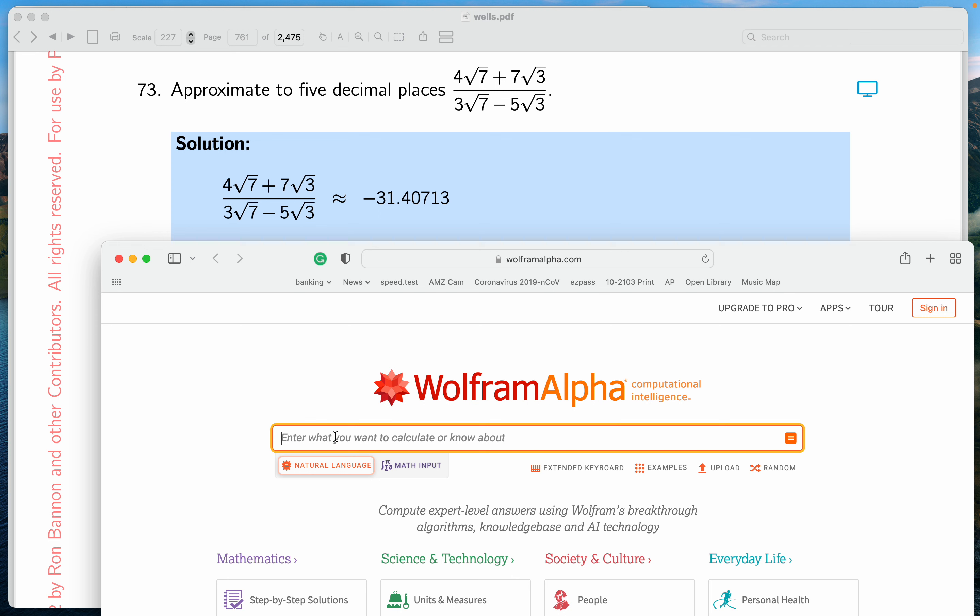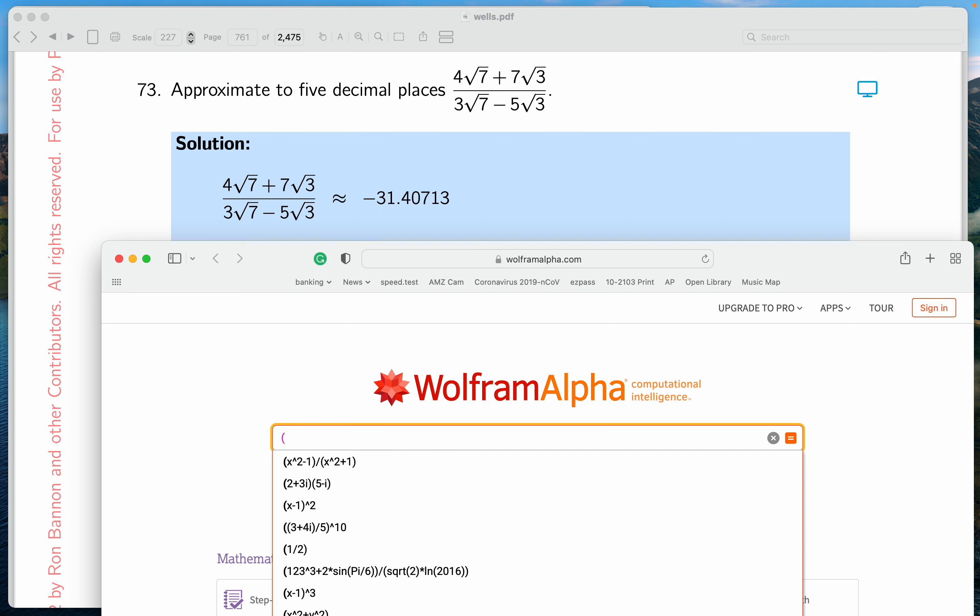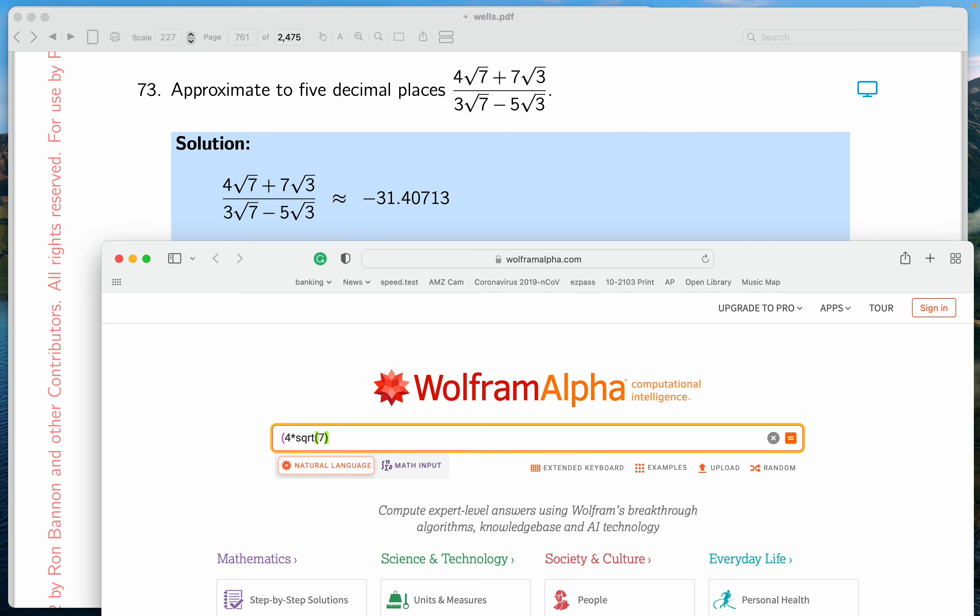Wolfram Alpha is an online computer algebra system, and I kind of like it. So the one thing I like about it is I'm going to type this in. This is going to be 4 times the square root of 7 plus 7 times the square root of 3. We're doing problem 73, by the way.